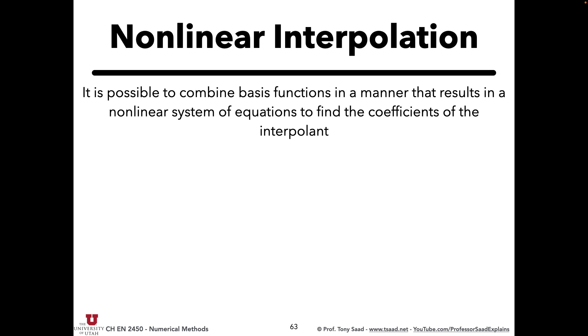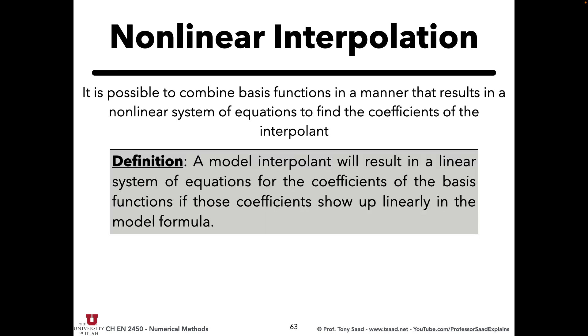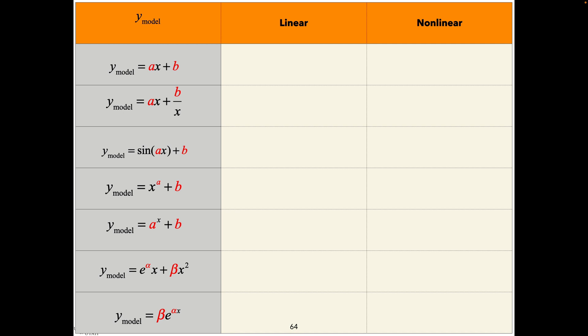In general, a model interpolant results in a linear system of equations for the coefficients if those coefficients show up linearly in the model formula. When I give you a·cos(x) + b·x², a and b show up linearly — linear system. When I give you α·cos(βx), that results in a nonlinear system for α and β.